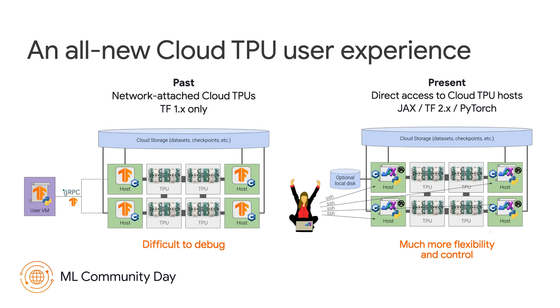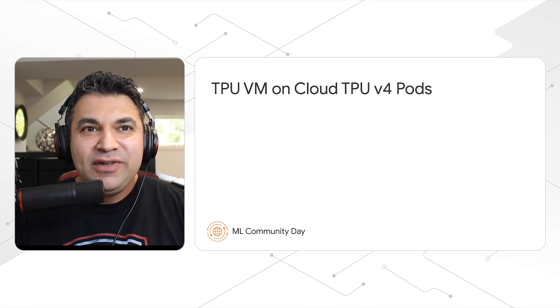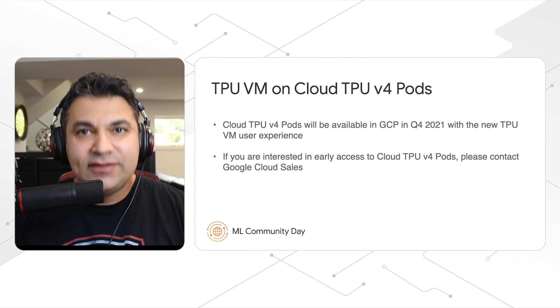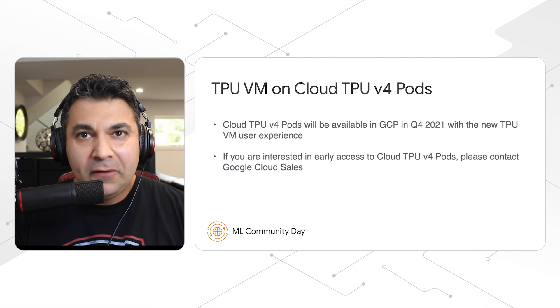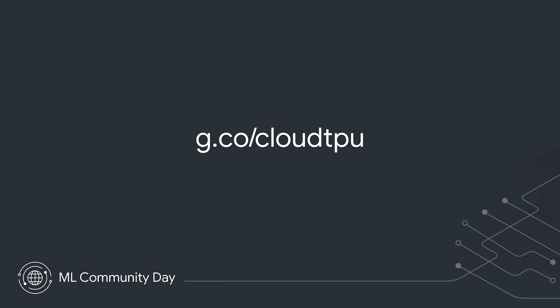You can use local storage, execute custom code in your input pipelines, and more easily integrate Cloud TPUs into your research and production workflows. I'm excited to say that the Cloud TPU v4 with the TPU VM architecture will be available in GCP this quarter. If you're interested in early access, please contact Google Cloud Support. Remember, you can always get in touch by visiting g.co.